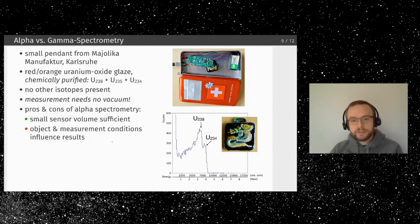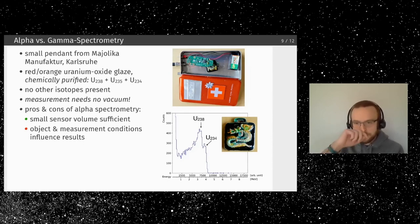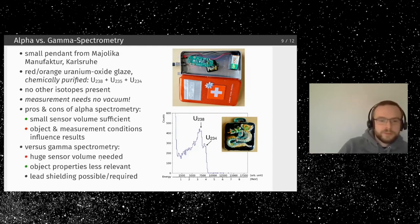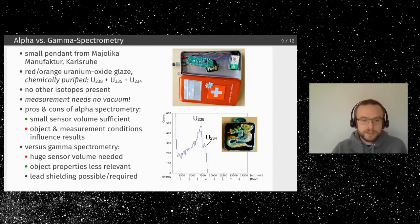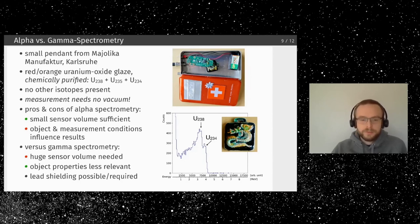Of course, the object's surface conditions strongly influence the measurement — additional paint may stop alpha particles, though they usually make it through a transparent paint layer. For gamma spectrometry you typically need large, expensive sensors and lead shielding, costing several hundred to several thousand euros. This silicon diode setup, by contrast, costs only 15 to 30 euros for everything you need, making it a very accessible alternative for alpha spectrometry.